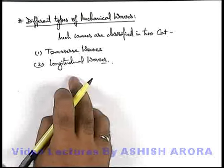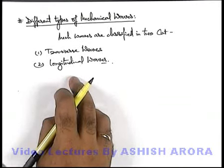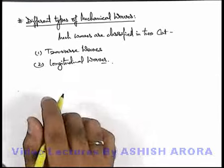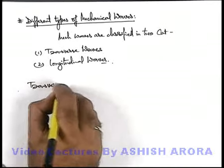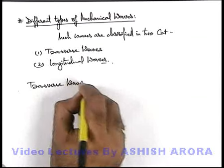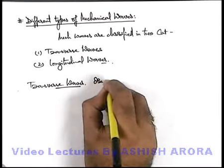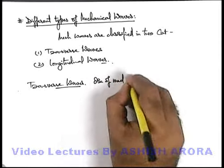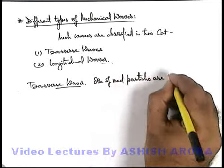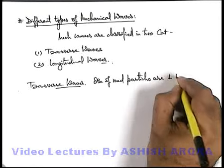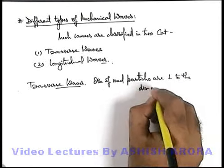The basic difference in the 2 kinds of mechanical waves is the direction of oscillations with respect to the flow of energy. When we talk about transverse waves, the oscillations of medium particles are perpendicular to the direction of energy flow.